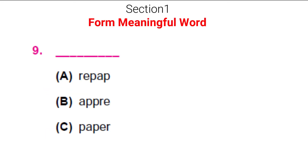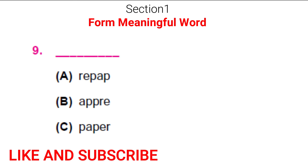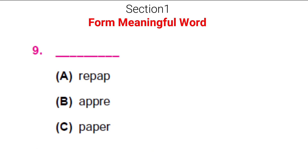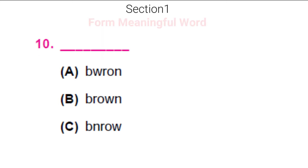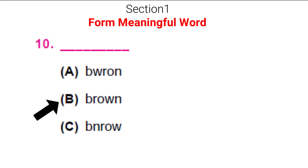What about these three options? Which is the right meaningful word? Yes, it is paper, on which you write or draw. Correct. Next one — have you spotted the right one? Yes, it's option B, brown, which is a color that you use in coloring mountains and trees.